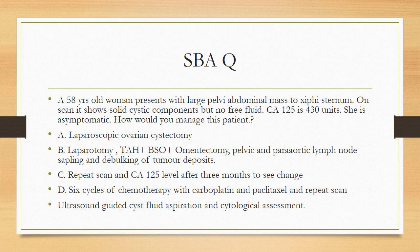MCQ 2: A 50-year-old woman presents with a large pelvic abdominal mass. On scan it shows solid cystic components but no free fluid. CA125 is 430 units. She is asymptomatic. How would you manage this patient? A — laparoscopic ovarian cystectomy; B — laparotomy with TAH, BSO, omentectomy, pelvic and para-aortic lymph node sampling and debulking of tumour deposits; C — repeat scan and CA125 level after 3 months; D — 6 cycles of chemotherapy with carboplatin and paclitaxel and repeat scan; E — ultrasound-guided cyst fluid aspiration and cytological assessment. Choose the best answer.